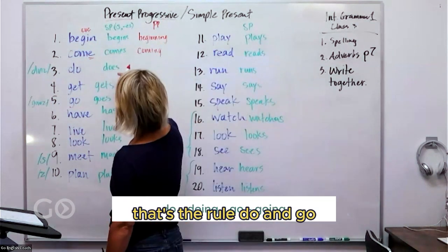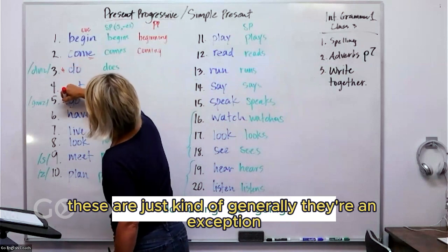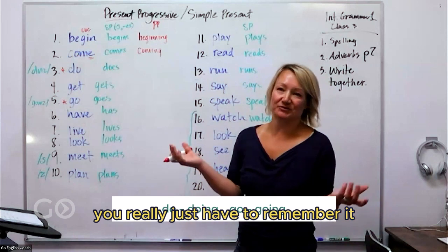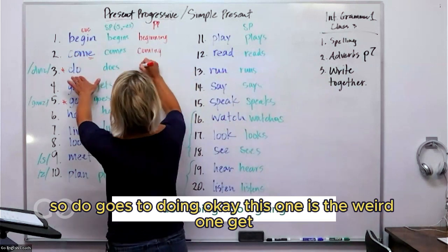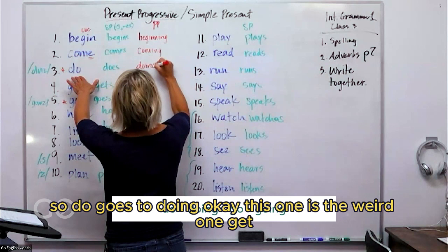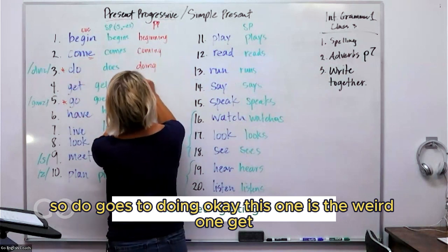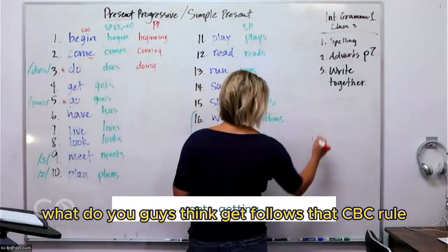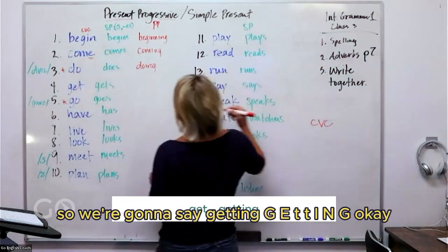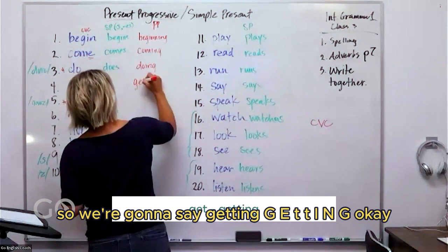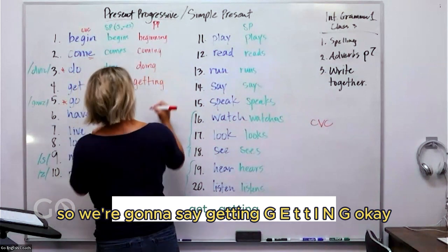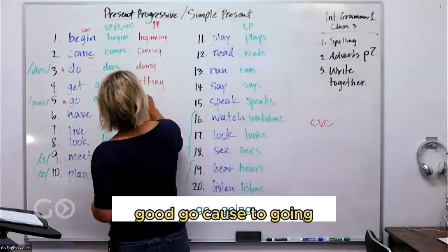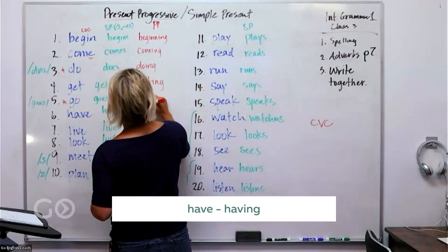Do and go, these are just kind of generally they're an exception, so you really just kind of have to remember it. That's the thing with these. So do goes to doing. This one is the weird one. Get, what do you guys think? Get follows that CVC rule, so we're going to say getting, G-E-T-T-I-N-G. Go goes to going.